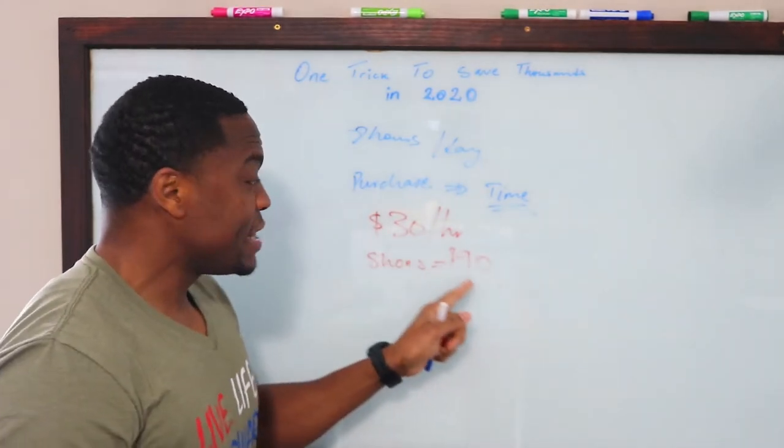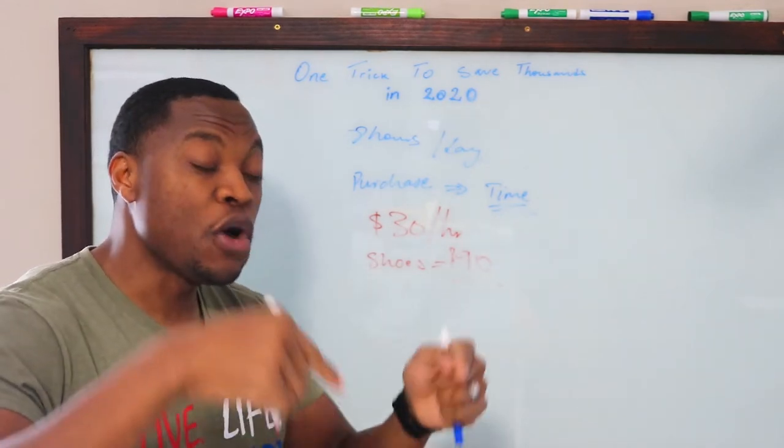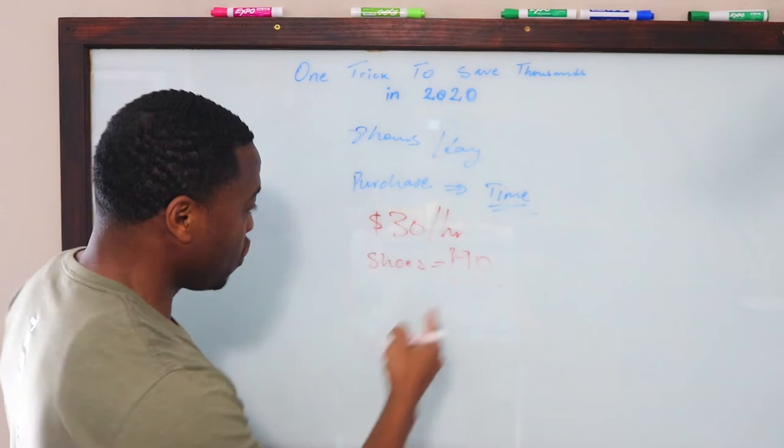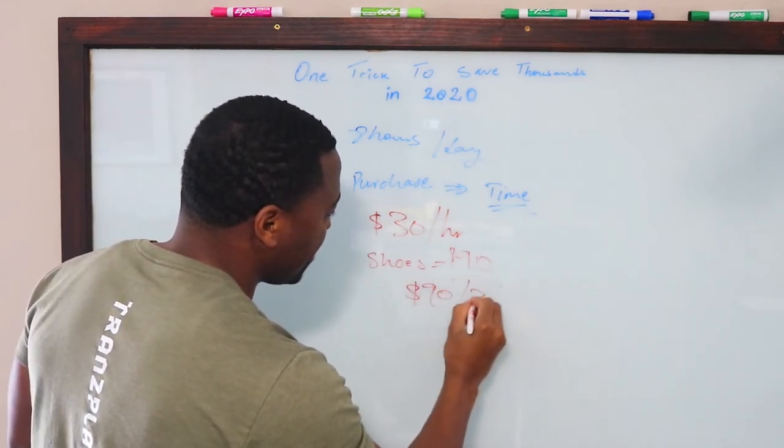This is where it's really going to sink in. So, let's convert that $90 into the amount of time it took you to actually work before you can buy that pair of shoes. So, if we do $90 by $30. So, $90, if we do that by $30.